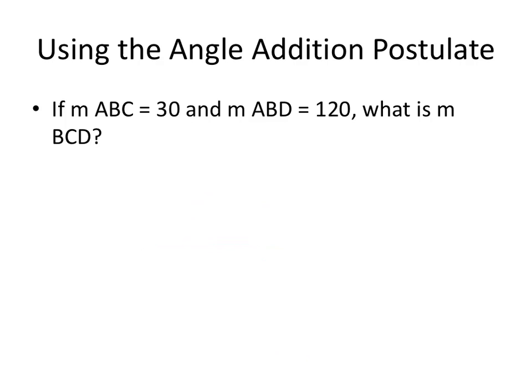So now let's use this angle addition postulate. So I don't include any diagrams here. So we have angle ABC and angle ABD going on here. So we've got angle ABC and we know that that is 30 degrees. And then ABD, this whole measure here is 120 degrees. And we want to know what is the measure of angle, sorry